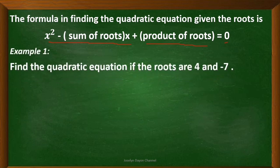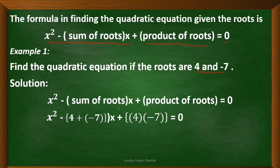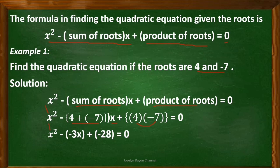Let's consider the first example: find the quadratic equation if the roots are 4 and negative 7. We write the formula as our guide, then substitute. Copy x squared. For the sum of the roots, we have 4 plus negative 7, then copy x. For the product of the roots, we multiply 4 times negative 7.